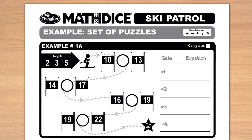In this example, your scoring numbers are 2, 3, and 5. The ski gates show the numbers 10 and 13. Using 2, 3, and 5, create an equation that results in 11 or 12, and you ski through the gates.